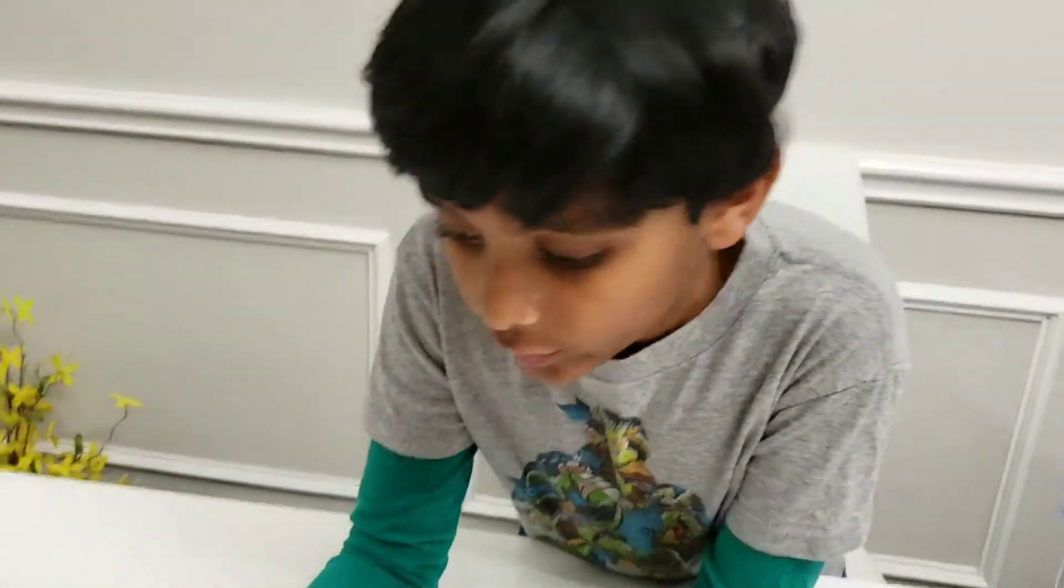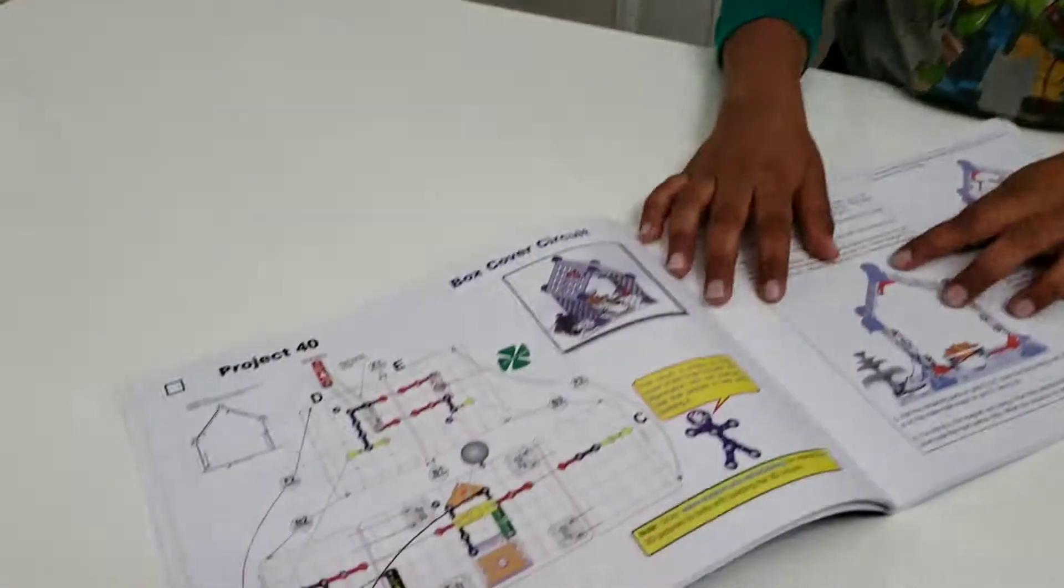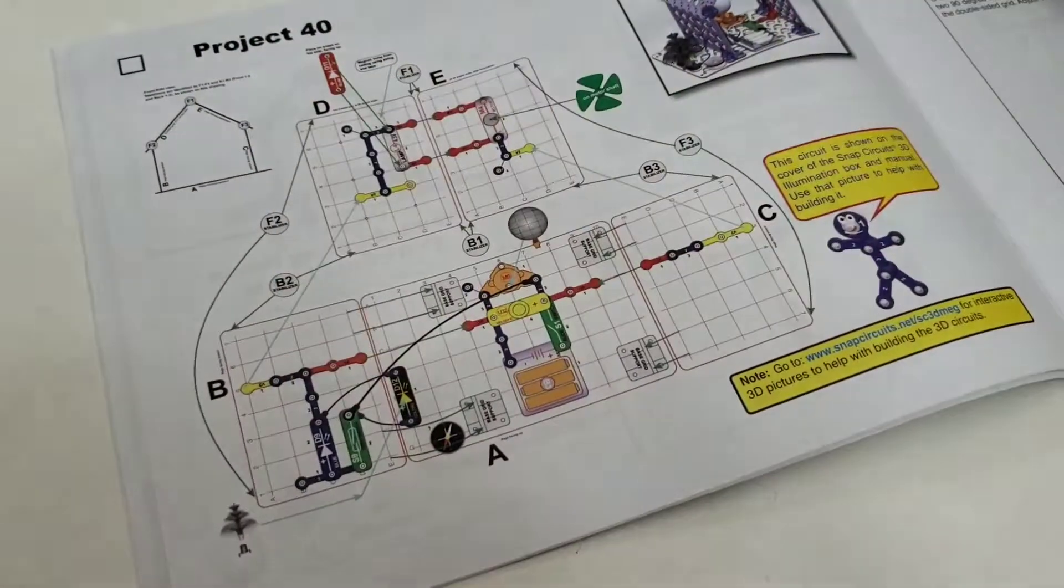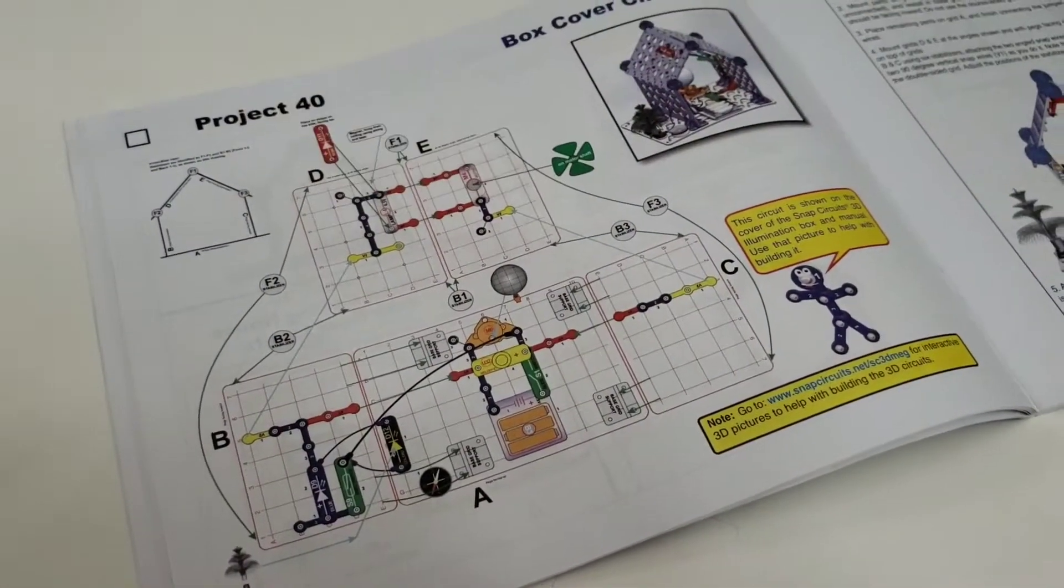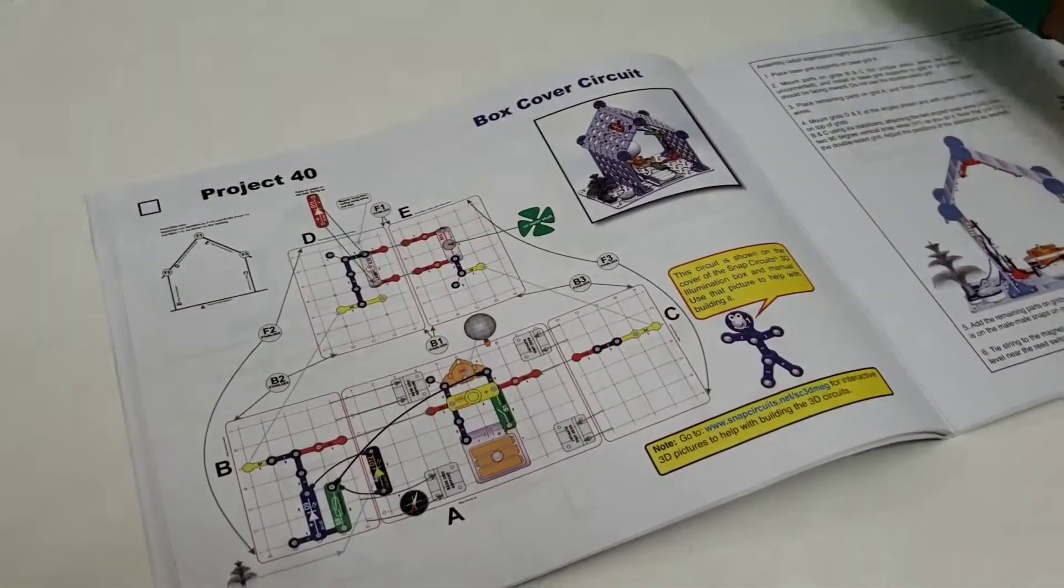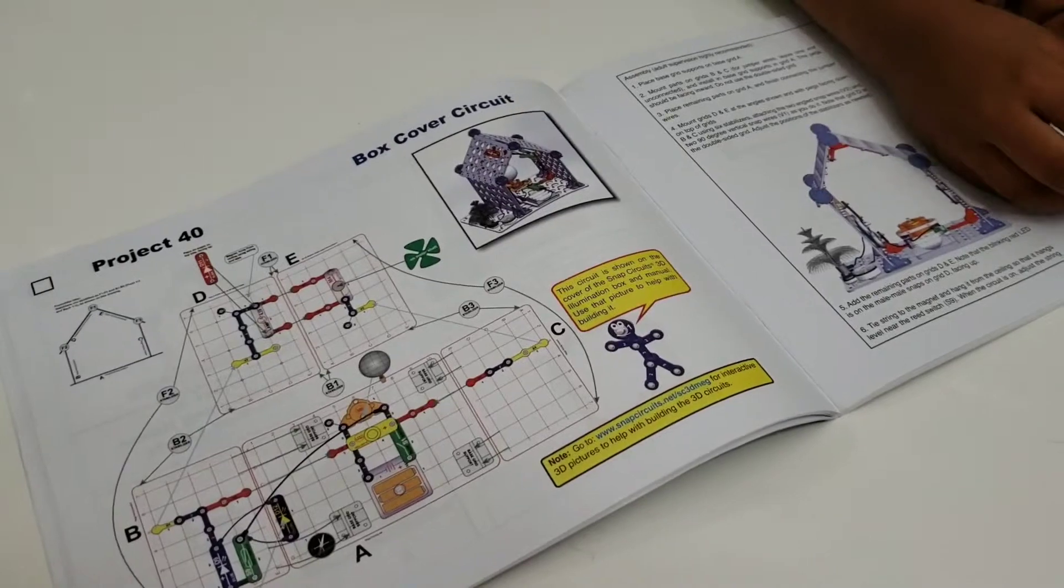As you can see, it shows all the different plates you'll need. Such as the base plate, and these walls, and the roof. And it shows all the wires, and how they connect using these wires, which are the jumper wires.